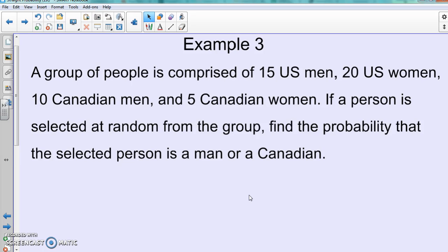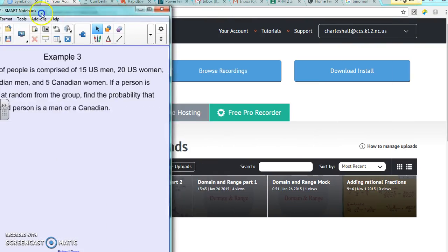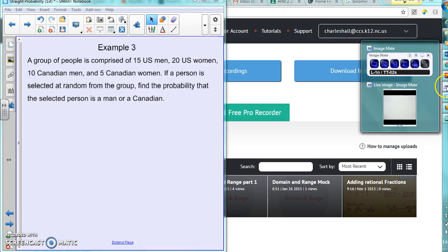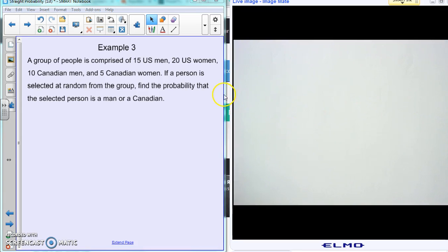At this point, go ahead and pause it, you're going to write it down, and then we're going to keep working on it. So we're talking about being a man or a Canadian, and so here it could be when it comes to these things you can also have where it's a Canadian man, so this is talking about things that could happen at the same time.